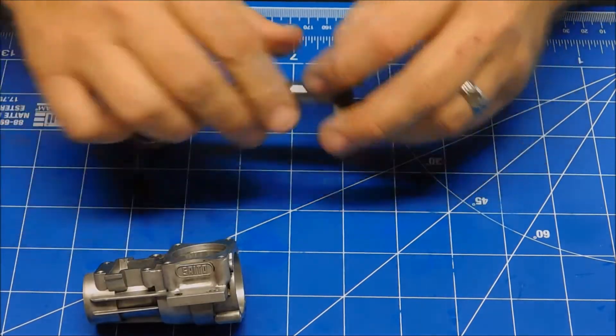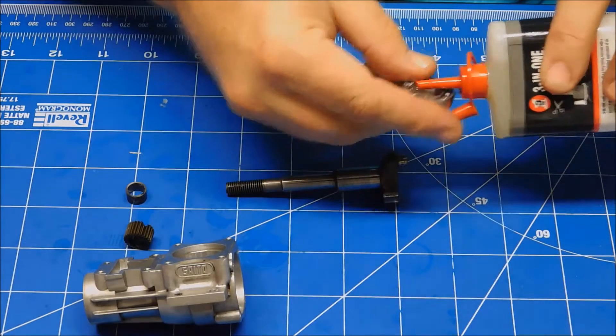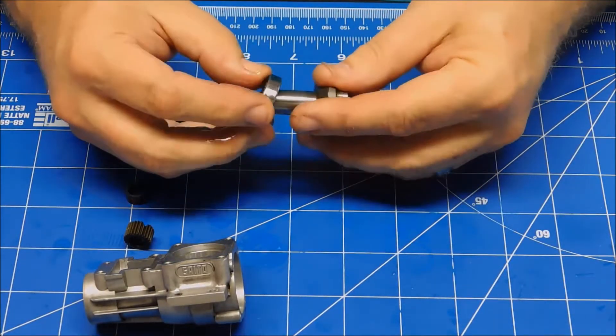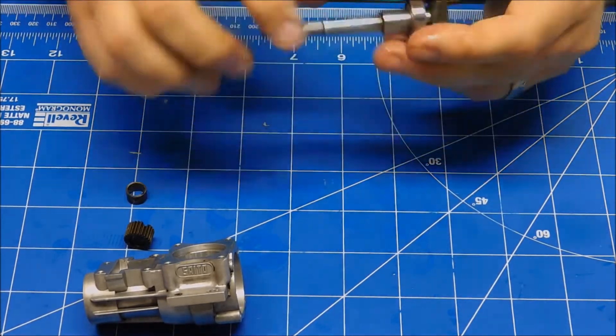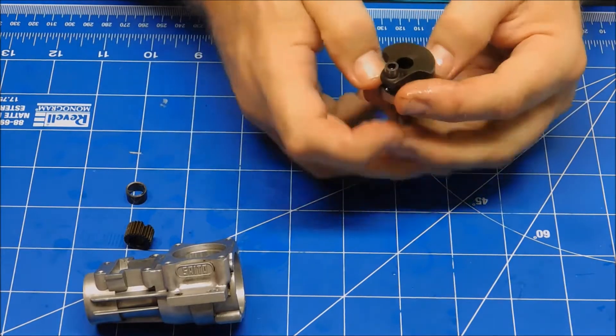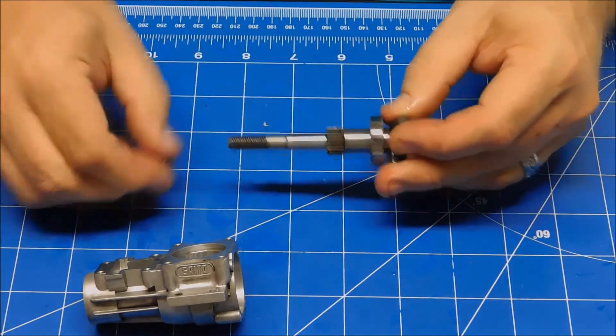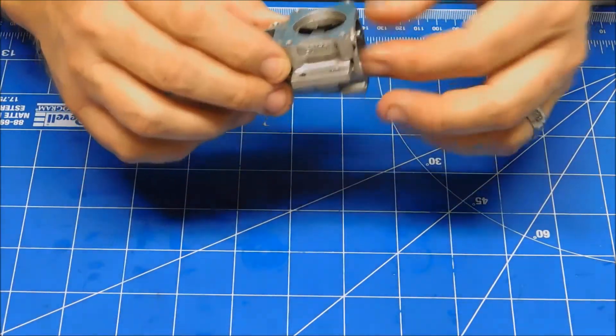This has finally cooled down enough. So I'm going to pull these guys off here. Oil up my bearing here real good. See how easily it slides onto the crankshaft. And now we'll put our pinion and our collar on. And now I'm just going to insert this in here.